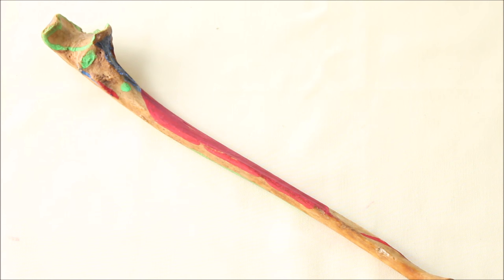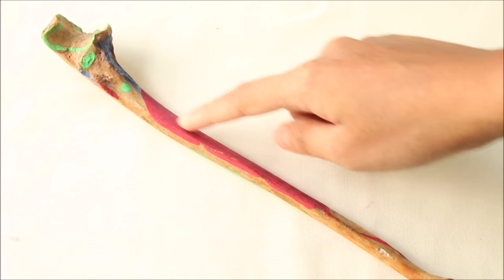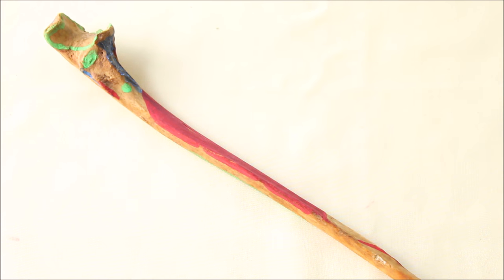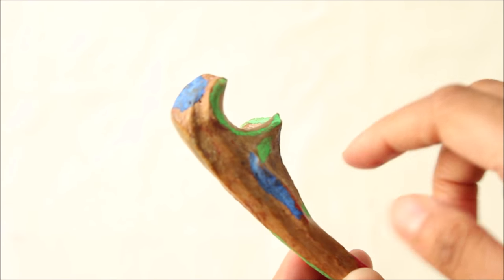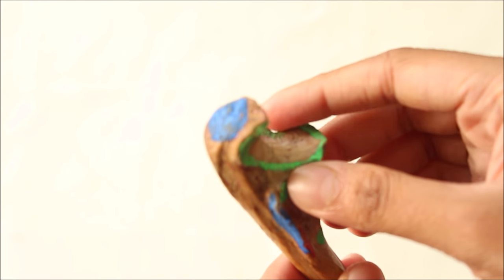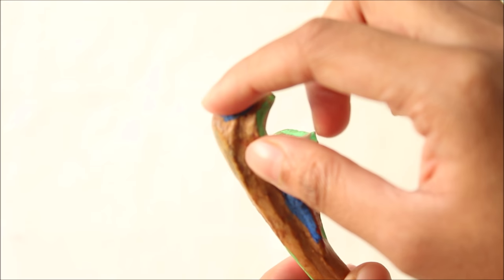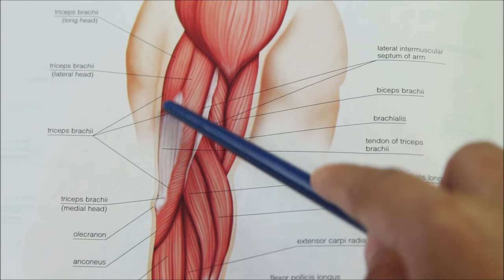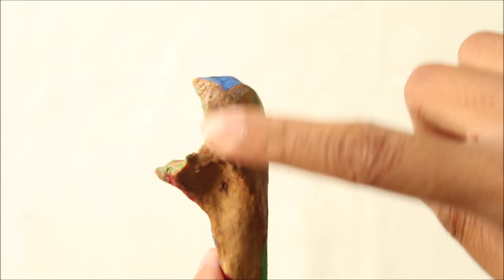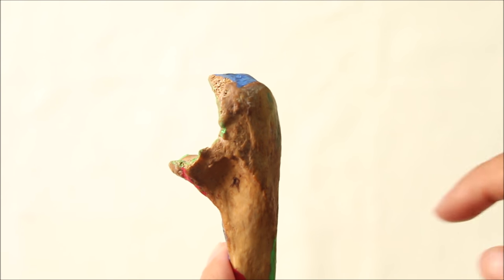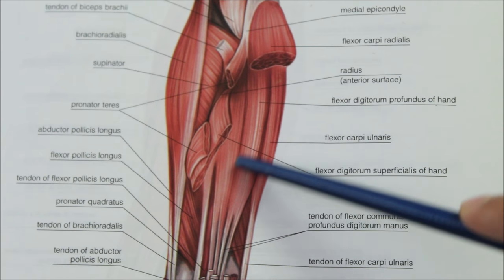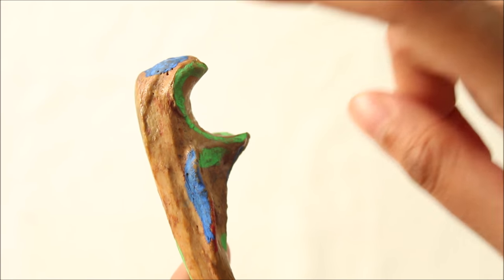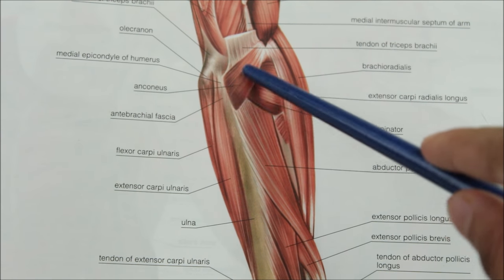Before we start with the attachments on the ulna, note that the red color represents the origin of muscles, the blue color indicates the insertion of muscles, and the green color represents the attachments of ligaments and joint capsules. On the olecranon process, the triceps is inserted into the rough posterior part of the superior surface. The medial surface gives origin to the flexor digitorum profundus and the flexor carpi ulnaris. The lateral surface of the olecranon process gives insertion to the anconeus.